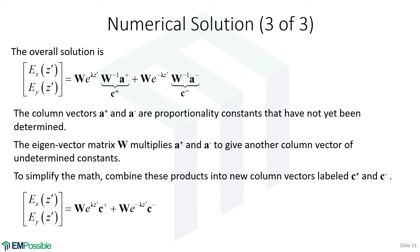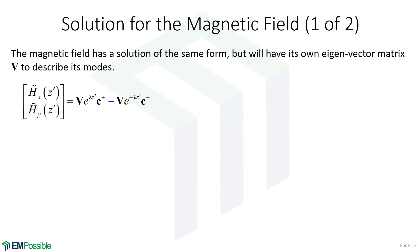Next we need to consider the solution for the magnetic fields. Electric and magnetic fields are coupled and have the same basic form of solution — they have to propagate the same because it's only one wave that has both an electric and a magnetic component. So the exponentials are the same and the mode coefficients are the same. What's different is what the fields look like, so I'm writing V instead of W because we have a different eigenvector matrix. I also put a minus sign here for convenience. We're free to do that because we haven't calculated the mode coefficients yet — if it was supposed to be positive and we wrote minus, we would simply get negative numbers in the mode coefficients. So at this point we're free to choose whatever sign we want, and that will be a convenient choice.